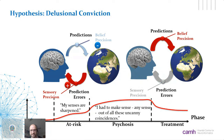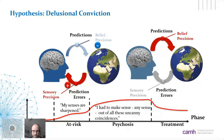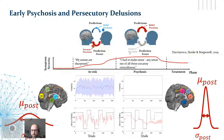For the second phase — 'I had to make sense of all these uncanny coincidences' — prediction errors signal that you need to change your model of the world rapidly, making it brittle. One way to stabilize the internal model is by increasing belief precision, explaining away prediction errors generated perhaps by abnormal dopamine processing. This compensatory increase of belief precision was an idea we brought forth, published in Molecular Psychiatry.